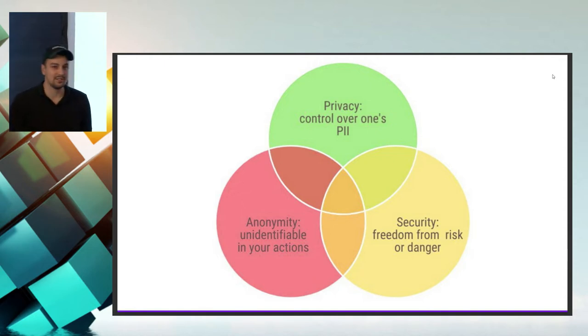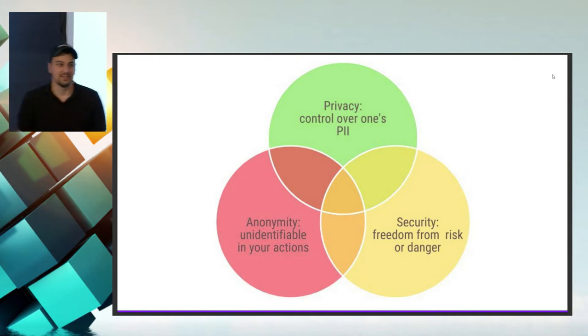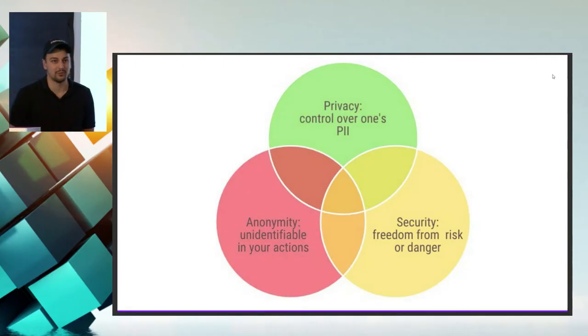There are, of course, some crossing points, which is maybe why some people mistakenly assume that privacy is anonymity and vice versa. Because on some products, especially on the blockchain, some things are not so private, also not so secure. And it's always a compromise whether you want the thing secure, anonymous, or private enough.